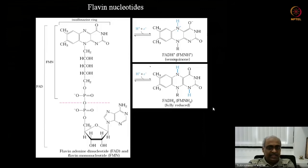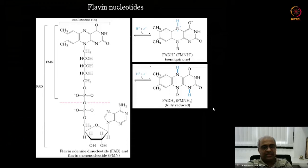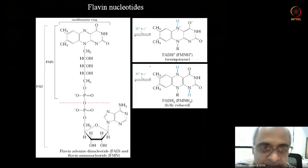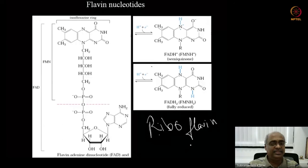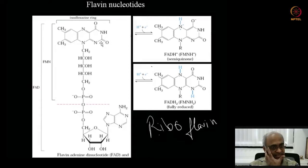The next electron carrier we need to familiarize ourselves with is flavin nucleotides. This introduces another B-complex vitamin called riboflavin. Its main structure is the isoalloxazine ring, and it is this ring that is involved in temporarily carrying electrons.